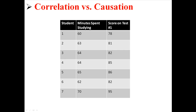Whereas here in correlational research, we have two variables: the time someone spent studying and the score they got on the first test of their class. We could say that there is some kind of relationship between these two values — for example, it seems like people who studied more did better on the test — but you can't imply that studying more causes people to do better on the test.